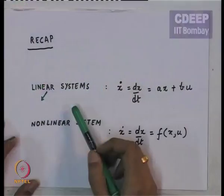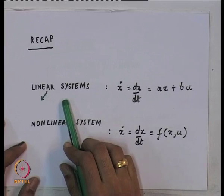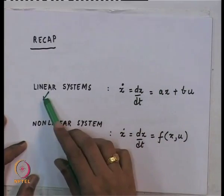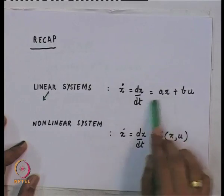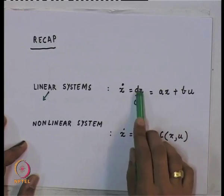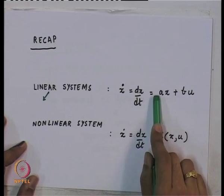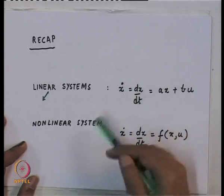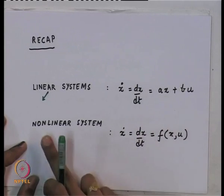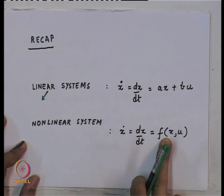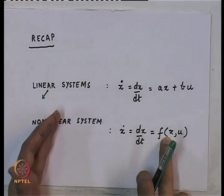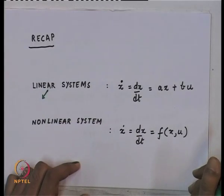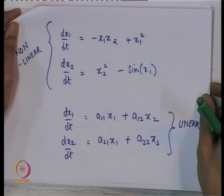Coming back to linear systems: they have not been defined rigorously yet. Linear systems are equations of the kind where the rate of change of a state equals a constant coefficient times the state. This is a first-order system; you can have higher-order coupled systems. Non-linear systems have more complicated functions — not simply a constant coefficient times the state — like sin(x) as seen in the single-machine infinite-bus system.